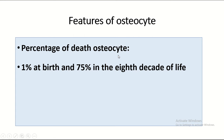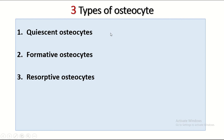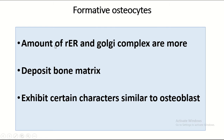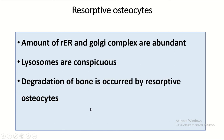The percentage of dead osteocytes is 1 percent at birth and 75 percent at the eighth decade of life. There are three types of osteocyte: osteoid (coincident) osteocytes, formative osteocytes, and resorptive osteocytes. Osteoid osteocytes contain less rough endoplasmic reticulum and Golgi complex, with an osmophilic lamina near the cell membrane. Formative osteocytes have more rough endoplasmic reticulum and Golgi complex, and deposit bone matrix with characteristics similar to osteoblasts. Resorptive osteocytes have abundant rough endoplasmic reticulum and Golgi complex, with conspicuous lysosomes; degradation of bone matrix is carried out by resorptive osteocytes.